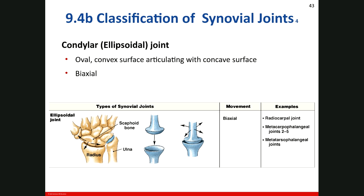The condylar, ellipsoidal, or condyloid joint is a biaxial joint with an oval convex surface on one bone that articulates with a concave articular surface on the second bone. Biaxial joints can move in two axes — such as back-and-forth and side-to-side. Examples include the metacarpophalangeal joints and the radiocarpal joint.